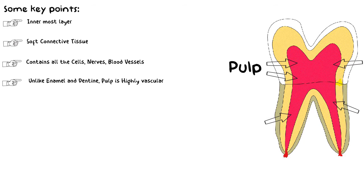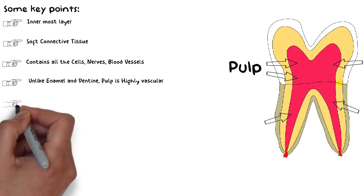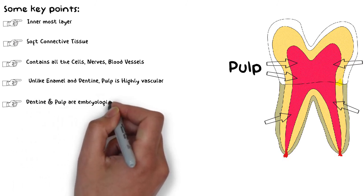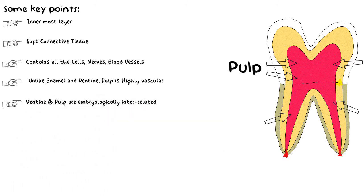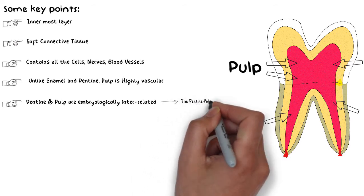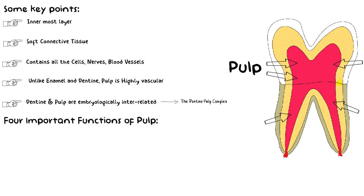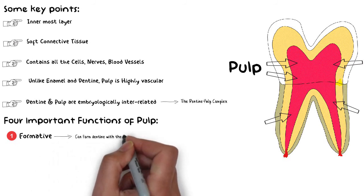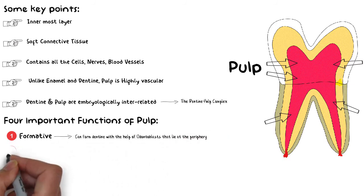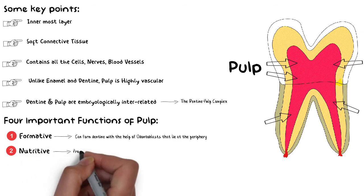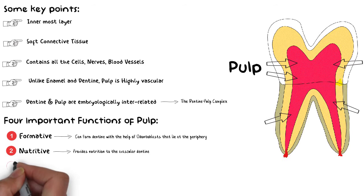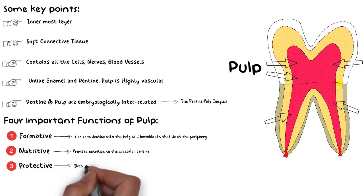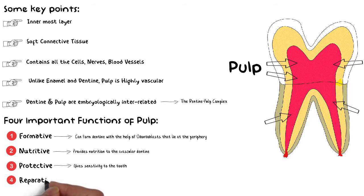The dentine and the pulp are distinct tissues but are very much interrelated, especially in their embryological origin, and hence should be considered together. This unity gives the pulp four important functions: number one, formative — it can produce dentine with the help of odontoblasts; number two, nutritive — it provides nourishment to the avascular dentine; number three, protective — it provides protection and sensitivity to the tooth; and number four, reparative — it can undergo dentinal repair whenever the situation demands.